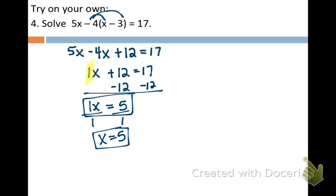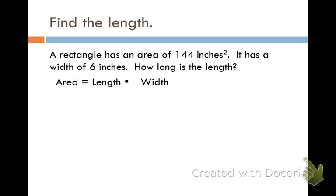Okay, here we have a rectangle and it has the area of 144 inches and it has a width of 6 inches. We want to find the length. Just as a reminder, the formula for area is area equals length times width. So we're going to plug in 144 for our area. We're going to plug in 6 for the width. And we're just going to use L for length. So here we need to solve this. 144 equals L times 6.